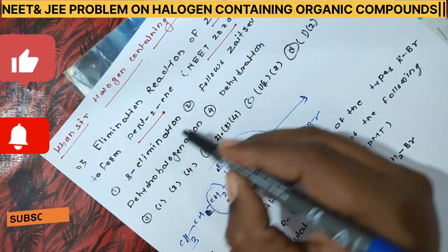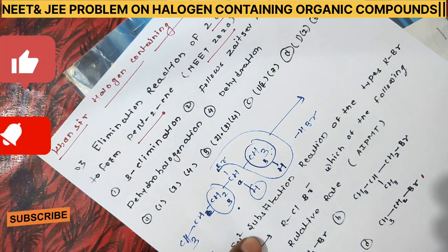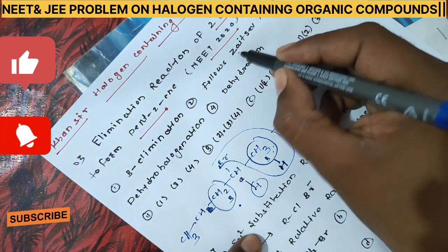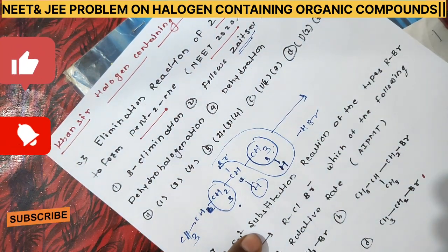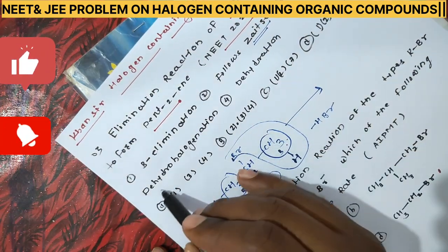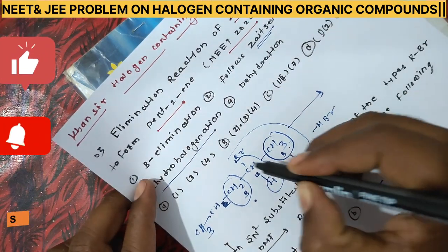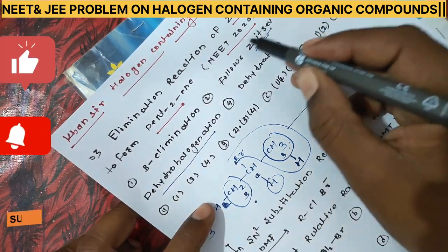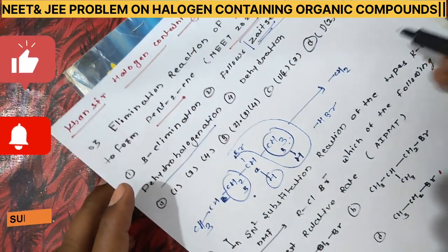So the product we get is 2-pentene. The removal of HBr follows Zaitsev's rule. So the beta elimination occurs by removal of HBr following Zaitsev's rule. This process is called dehydrohalogenation.